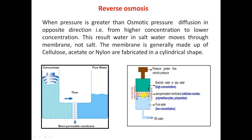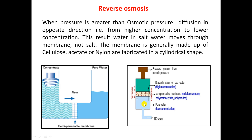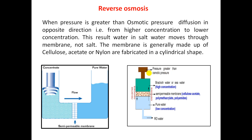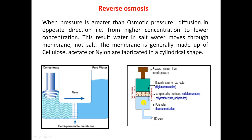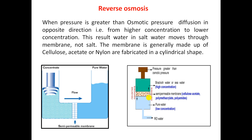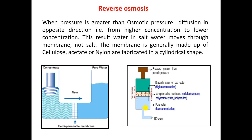In the figure, this is the semipermeable membrane separating pure water and brackish water or seawater. The concentration of seawater is high and the concentration of pure water is less. When we apply pressure using a piston — and that pressure must be greater than osmotic pressure — instead of water moving from lower concentration to higher concentration, because of the applied pressure, water moves in the reverse direction, from higher concentration to lower concentration. The semipermeable membrane allows only water molecules to pass through it, so whatever water comes out through the membrane is free from dissolved salt. In this way, we convert seawater into potable water.